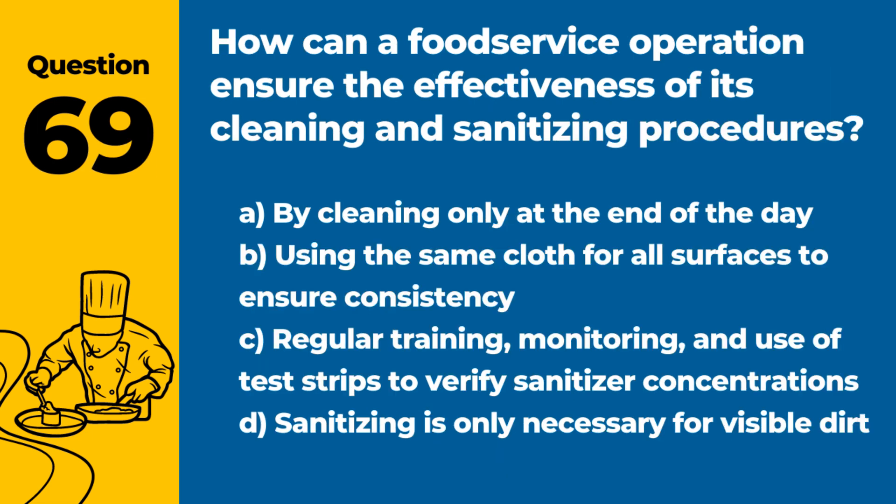Question 69. How can a food service operation ensure the effectiveness of its cleaning and sanitizing procedures? Answer: C. Regular training, monitoring, and use of test strips to verify sanitizer concentrations. Effective cleaning and sanitizing practices are critical for maintaining a safe food preparation environment.